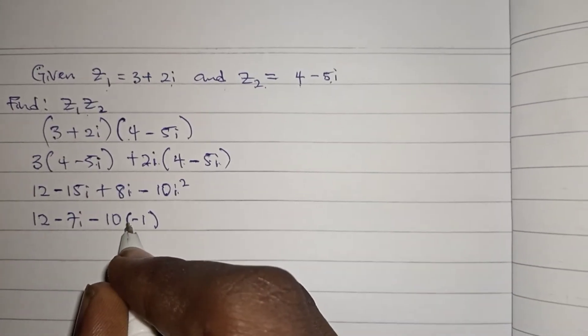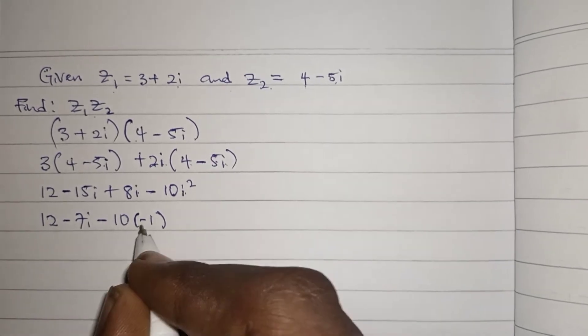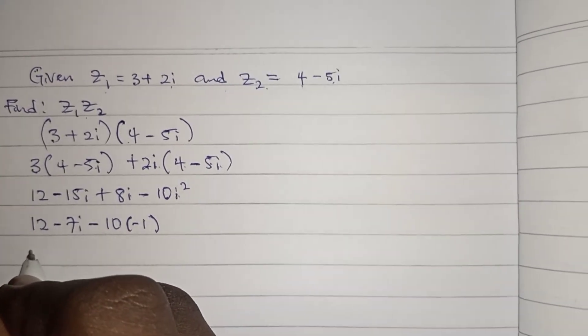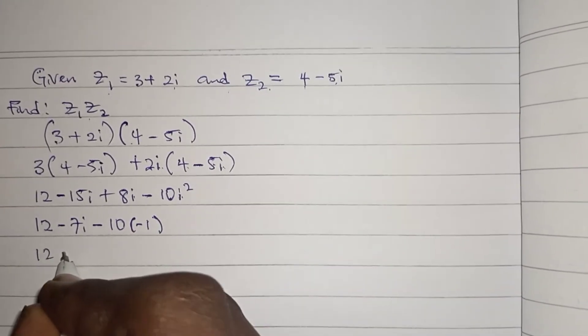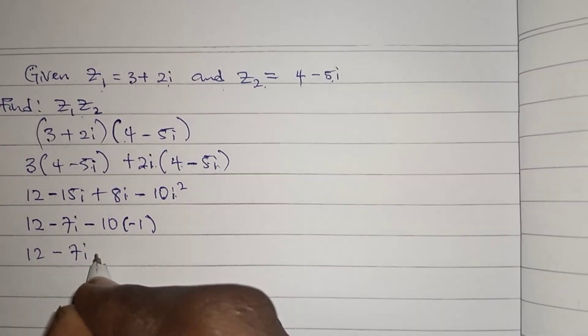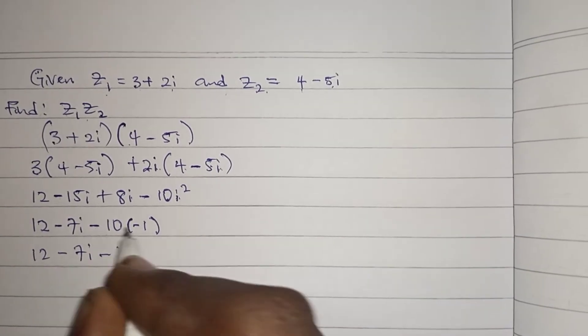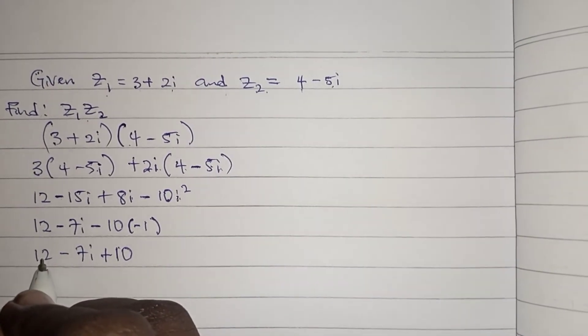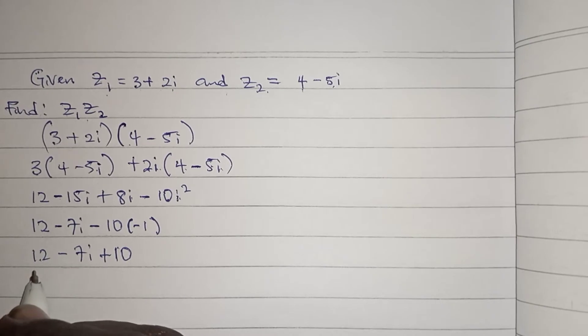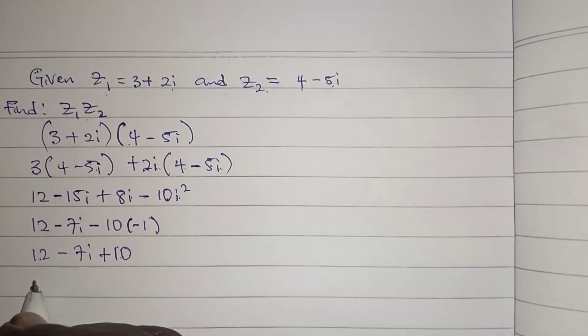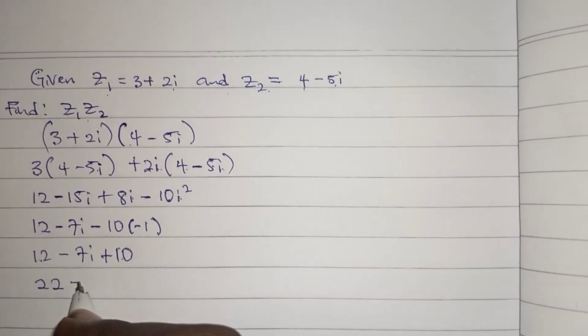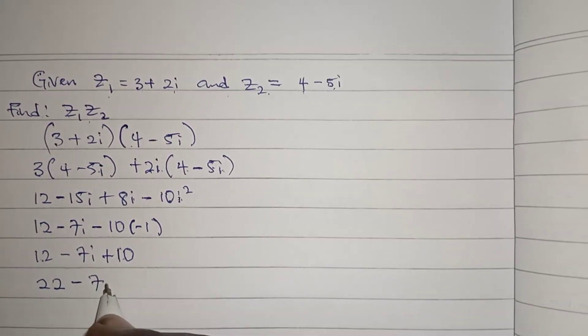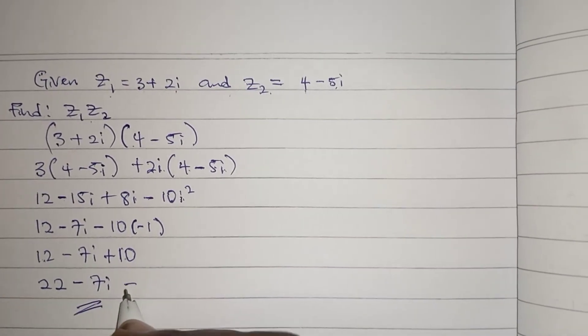So we replace i squared with minus 1. Solving we have 12 minus 7i, minus 10 times minus 1 gives us plus 10. So we have a real part here and a real part, we add them together. 12 plus 10 minus 7i gives us 22 minus 7i, and this is equal to z1 z2.